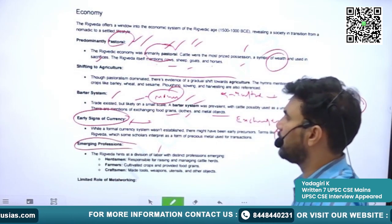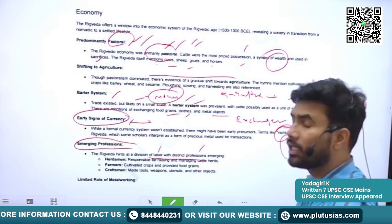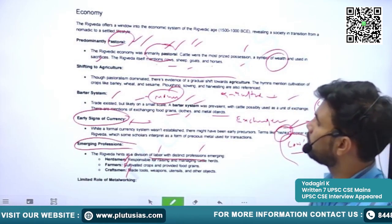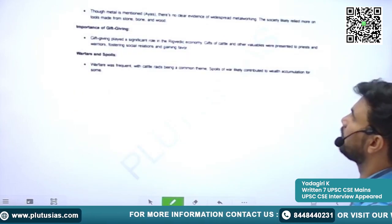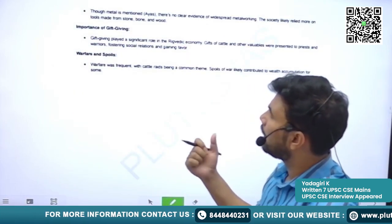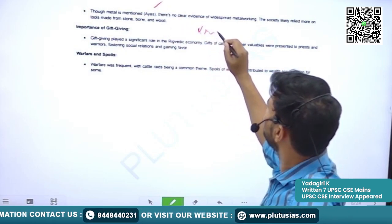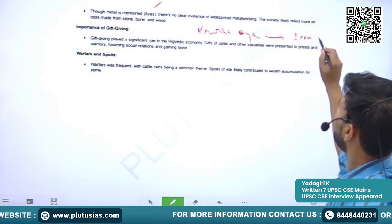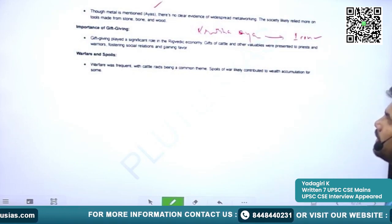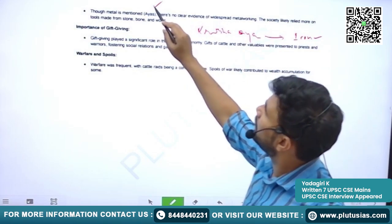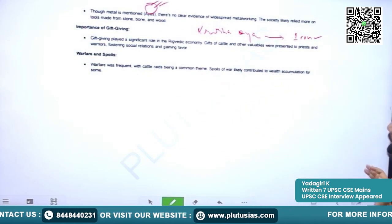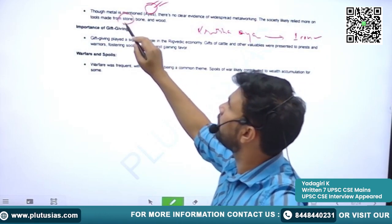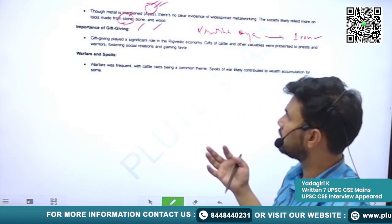We can see a brief division of labor in the Rig Vedic period, with distinct professions emerging like horsemen, farmers, craftsmen, etc. There was also a limited role of metal working. We hear words like Aya and Krishna Aya — Krishna Aya is likely iron, which was discovered in the Vedic period. Other tools made from stone, bone, and wood can also be seen here.